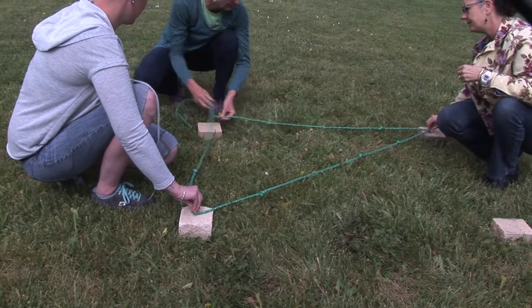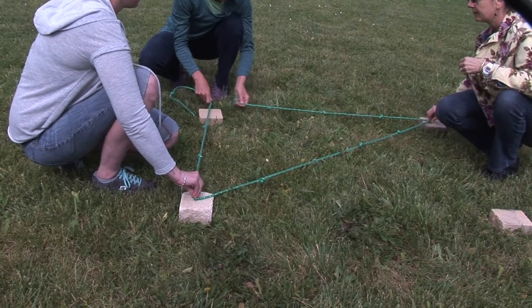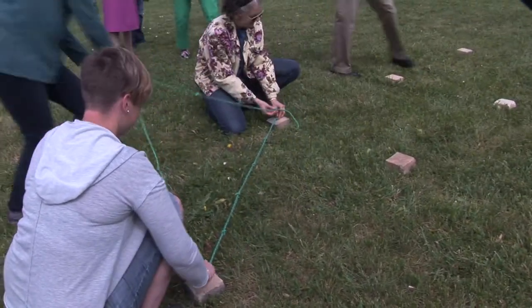They discovered that they could knot a rope and if they knotted it in a particular way, that they were able to create something called a right triangle.